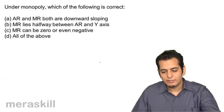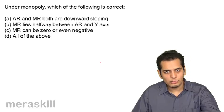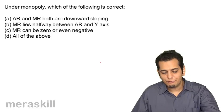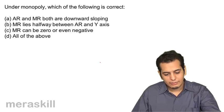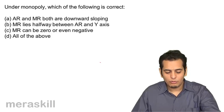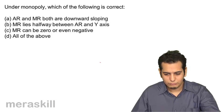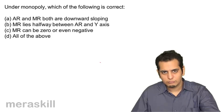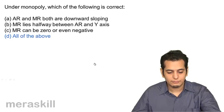Under monopoly, which of the following is correct? a) AR and MR both are downward sloping, b) MR lies halfway between AR and the Y-axis, c) MR can be 0 or even negative, d) all of the above. The answer is d) all of the above — all the statements are correct.